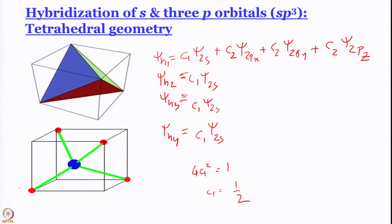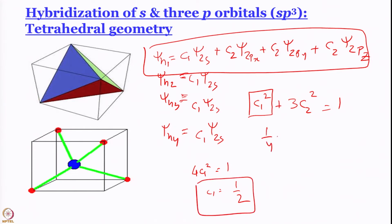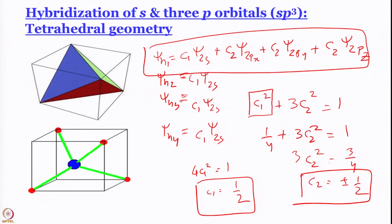What about c2? The hybrid orbitals must be normalized, so c1² + 3·c2² = 1. Since c1² = 1/4, we get 1/4 + 3·c2² = 1, so c2² = 3/4... wait, actually c2² = 1/4, giving c2 = ±½. One solution is c2 = +½ for all p orbitals — let us start with that totally symmetric answer where every p orbital coefficient is +½.